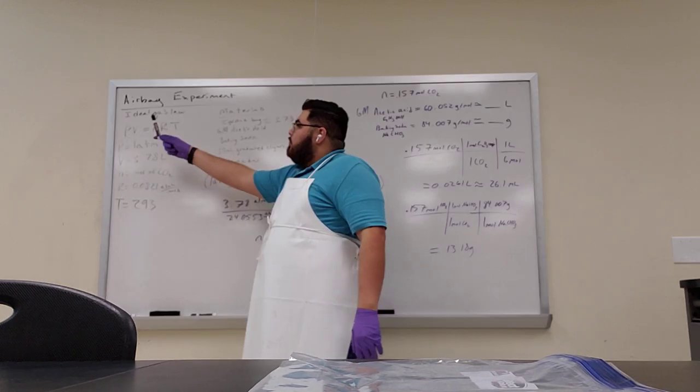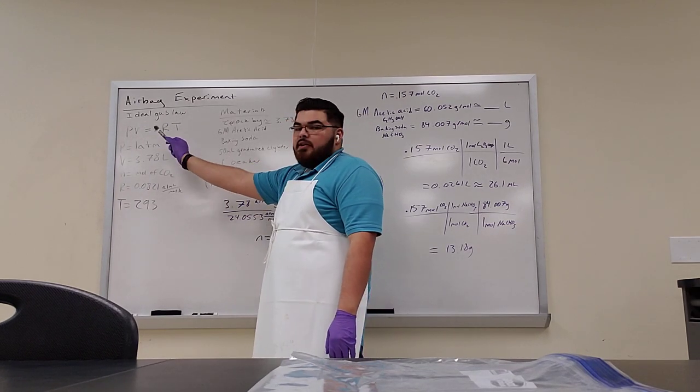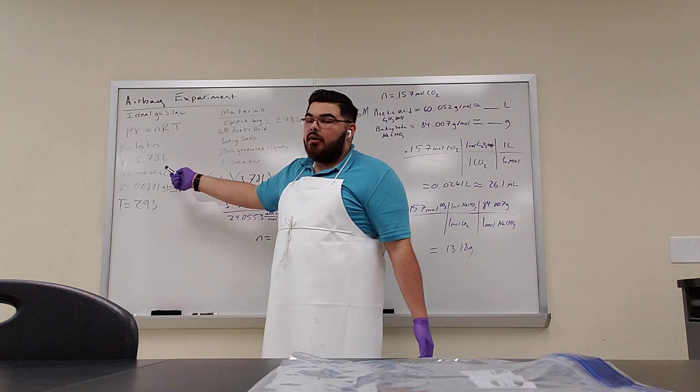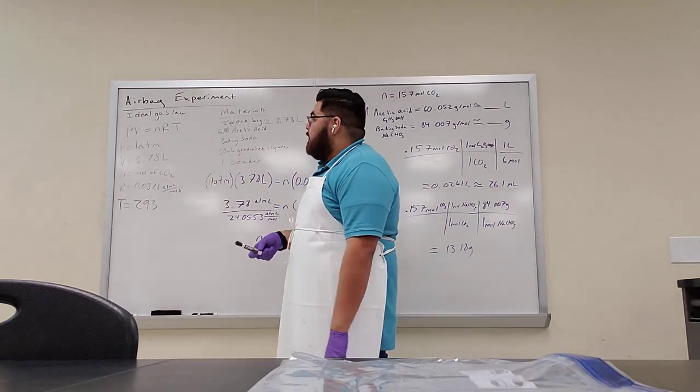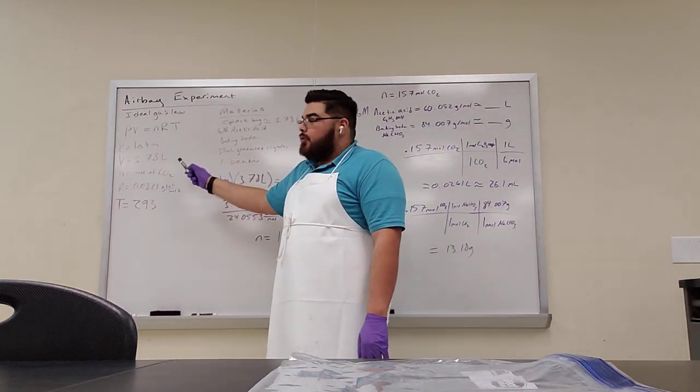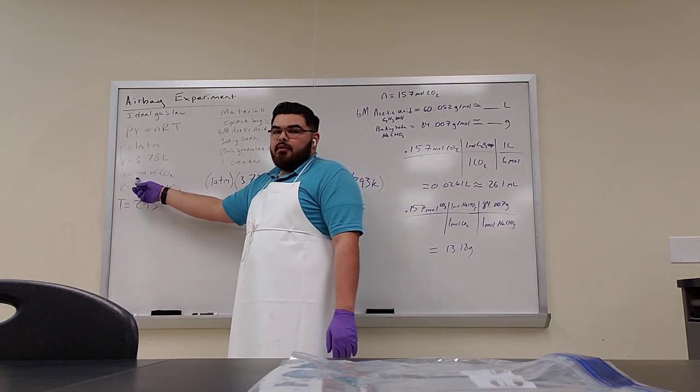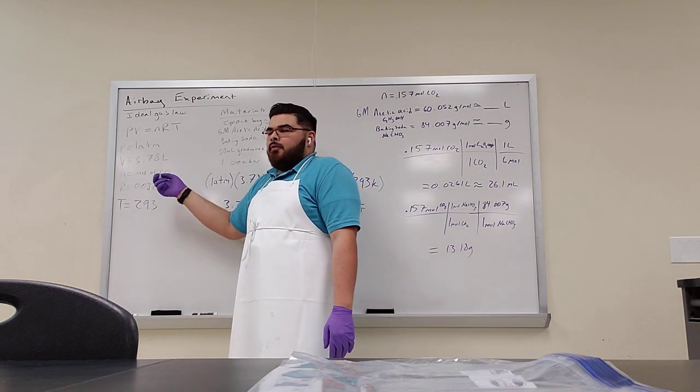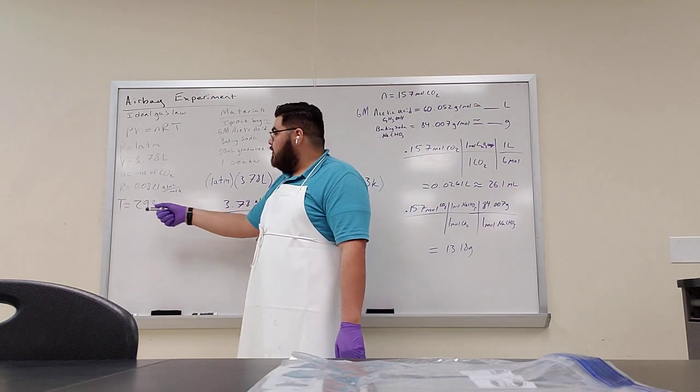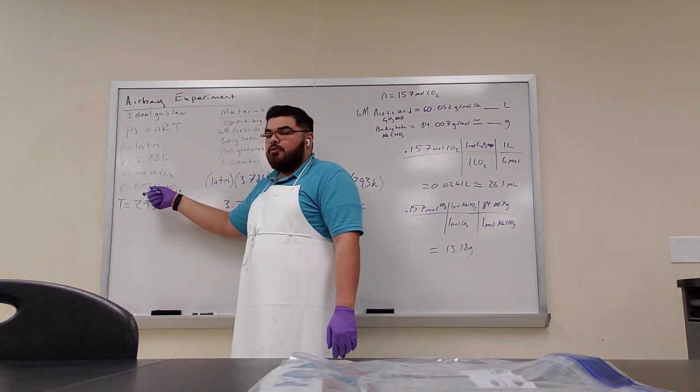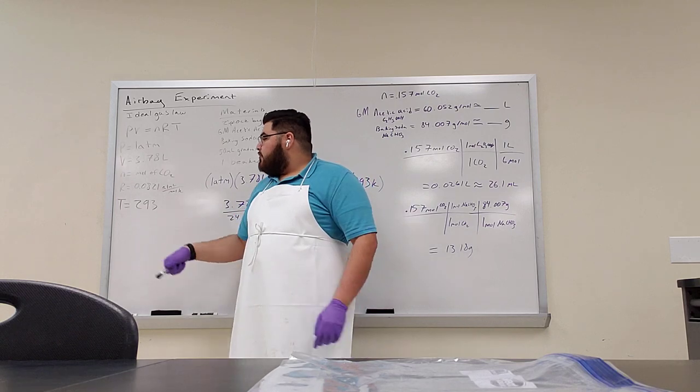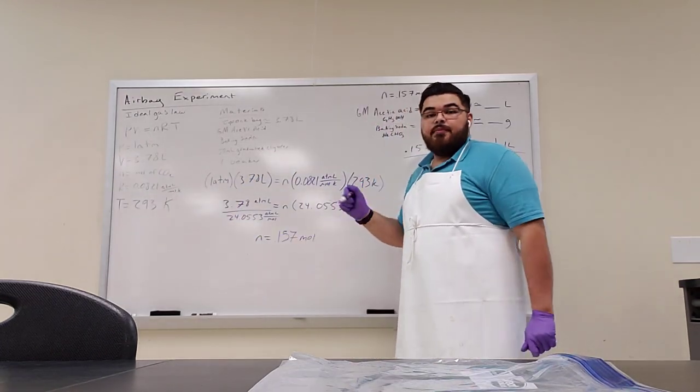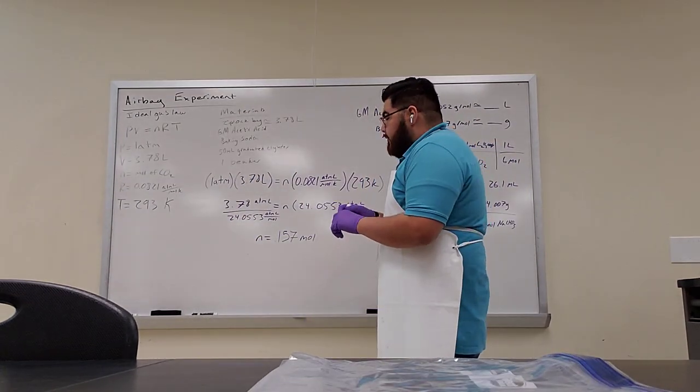So the ideal gas law, the equation we're going to use is PV equals NRT, where our P is the atmosphere pressure, so it's one ATM. Our volume is the ziploc bag we're using, which is 3.78 liters. And we're solving for N, because we have the CO2 produced, with R is where we put the ideal gas constant, which is about 0.0821, and our temperature is about 293 Kelvin, because that's the temperature right now.